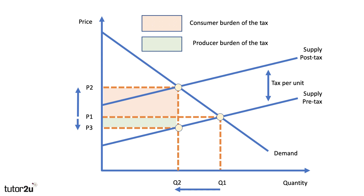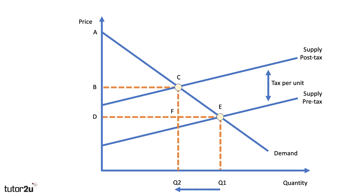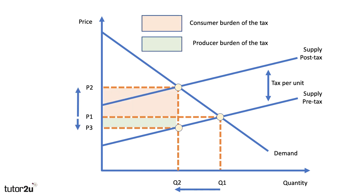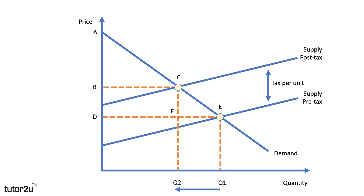We're going to be looking at consumer surplus using labelled areas to show the changes. On the same diagram, I've replaced some prices with labels: A, B, C, D, E, F. There are a series of questions coming up — if you want to pause the video at any moment, please feel free to do so and have a go at these questions to check your understanding.